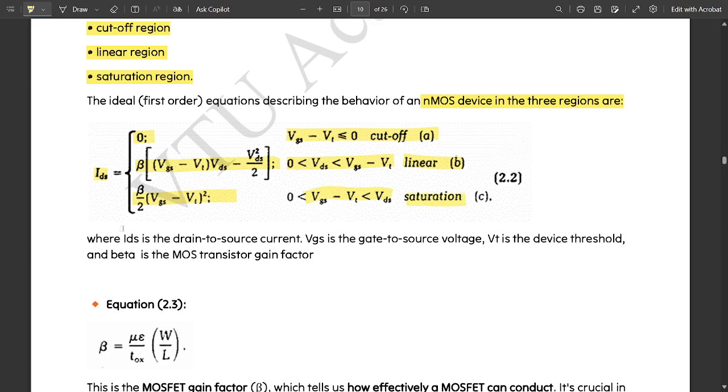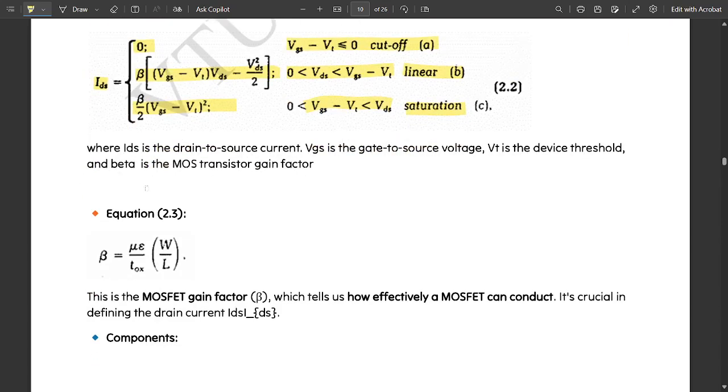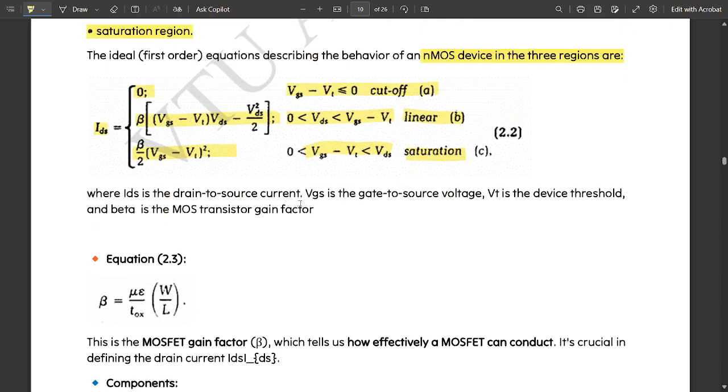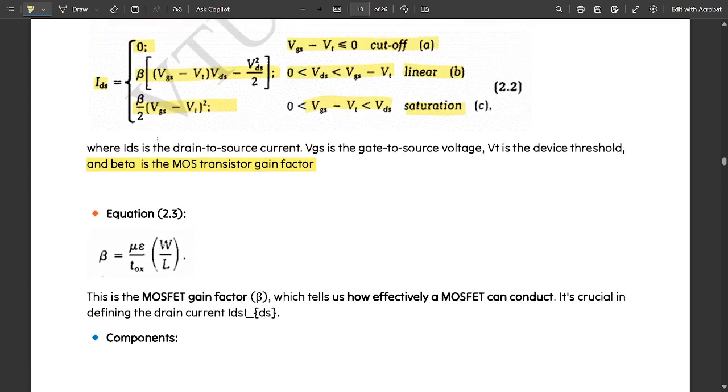What is this beta here? IDS is the drain to source current, VGS is the gate to source voltage, VT is the device threshold, and beta is the MOS transistor gain factor. This is basically the gain factor in these equations. It has a separate formula here.